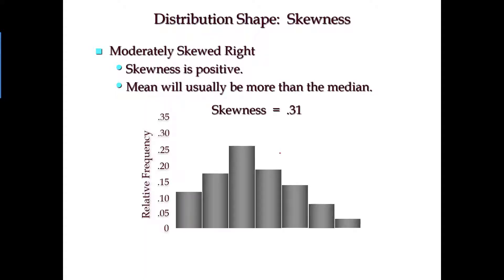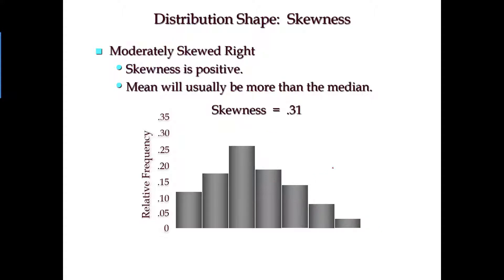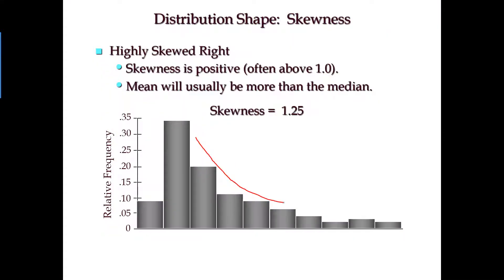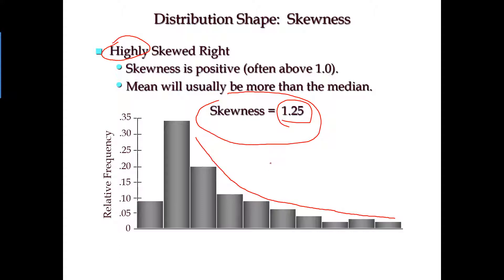In the next slide, I will show you a highly skewed right distribution. You can see the right tail stretches really, really long and is much flatter than the previous chart. Based on the value of skewness, it's positive, so it's skewed right. The reason we call it 'highly' is because the skewness value is larger than one. So skewness larger than one is considered highly skewed right.